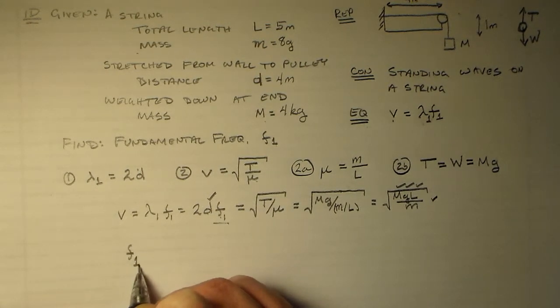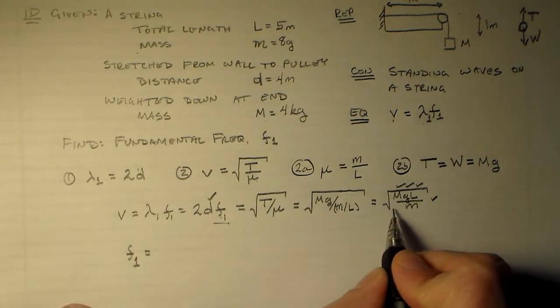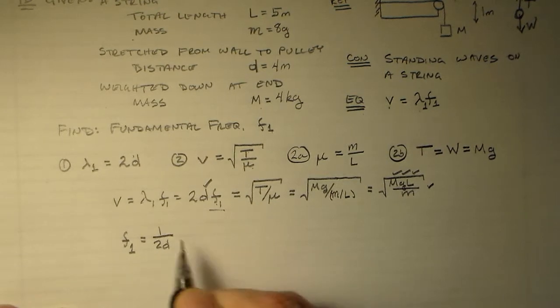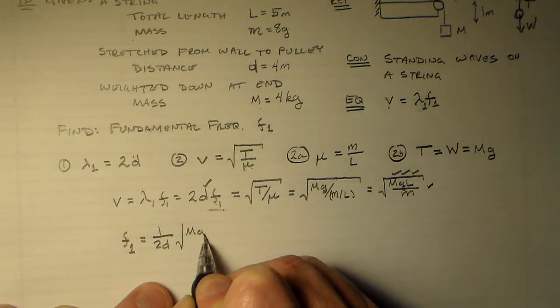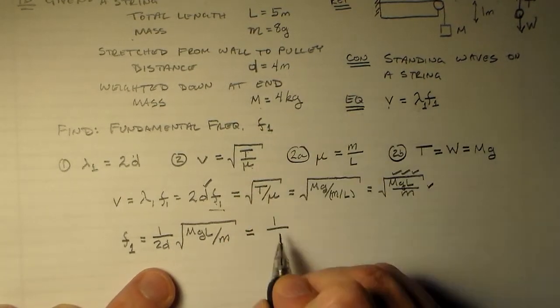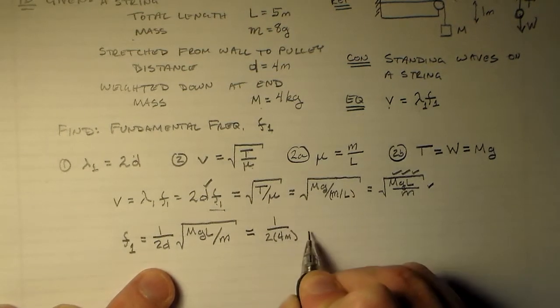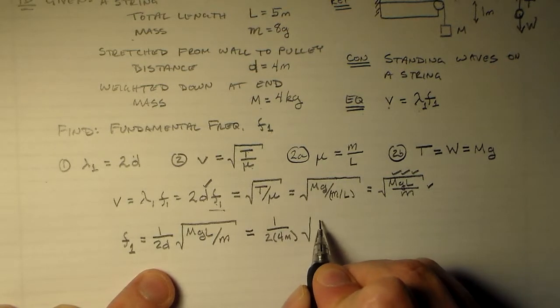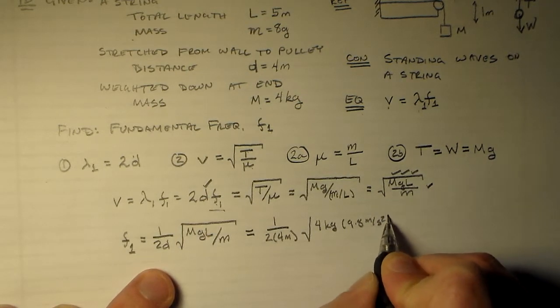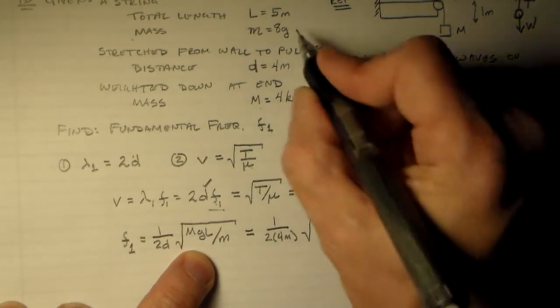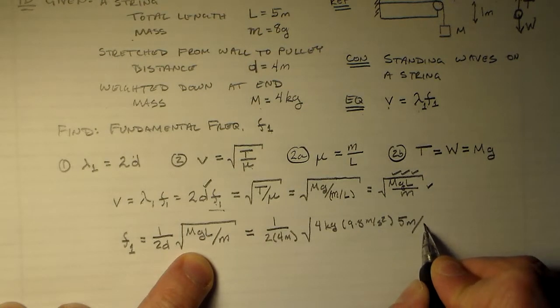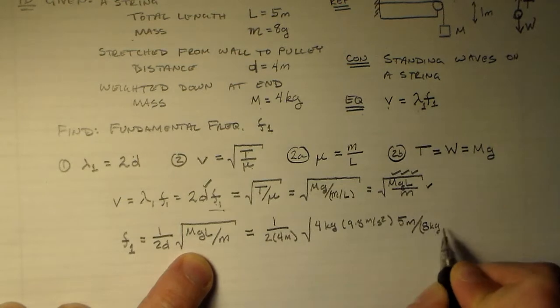We're doing pretty good. So, just rewrite that. F1 is equal to 1 over 2D times the square root of all this fun stuff, MGL over M. So that means we have 1 over 2 times 4 meters, times the square root of big M is 4 kilograms, times G, which is 9.8 meters per second squared, times this big L guy, which is 5 meters divided by the little m over there, which is 8 grams, so that's 8 kilograms divided by 1,000.